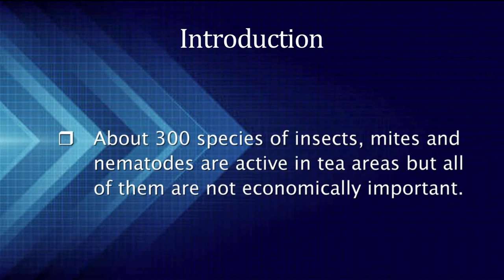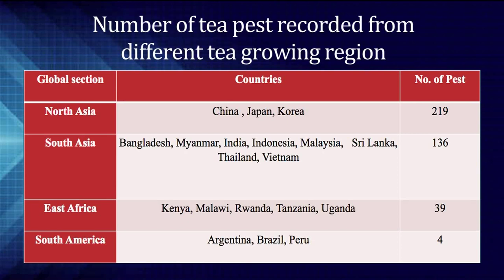However, all of them are not economically important. So, first let's discuss about different types of tea pests. The number of pests found in the old tea-growing countries of Asia, including China, India, Bangladesh, Sri Lanka, and Indonesia, is much higher than those in Africa and other countries which started growing tea in more recent times. Now, let's see the number of tea pests occurring in different regions of the world. If we divide the countries into different global sections, the highest number of pests are recorded from the North Asian section.